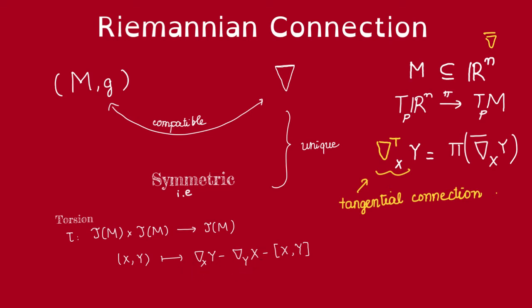What does it mean for a connection to be symmetric? That means its torsion tensor is zero. To say that a connection is symmetric is equivalent to saying that this difference is measured by the Lie bracket. We will explain the intuition for this later when it's relevant.